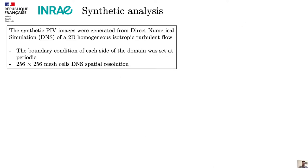First, synthetic analysis. We created synthetic PIV images of 2D isotropic homogeneous turbulent flows, and we used direct numerical simulation to simulate the flow region. We had periodic boundary conditions on the sides of the domain, and then we created PIV images.